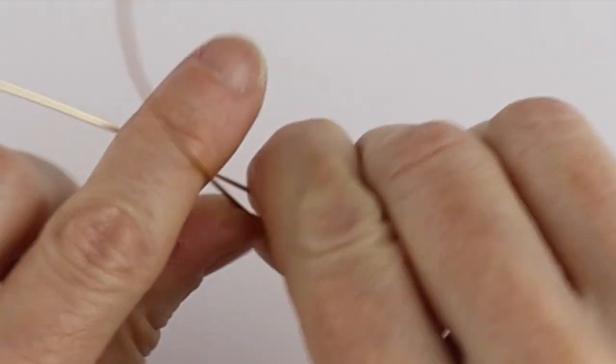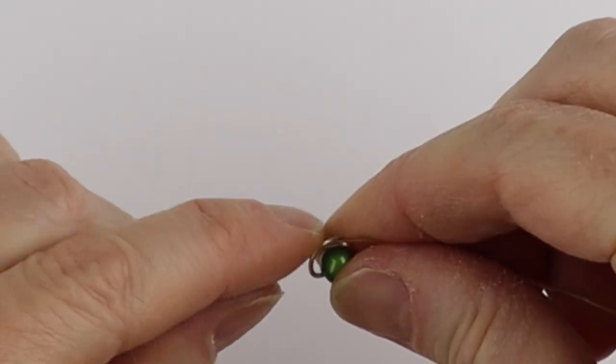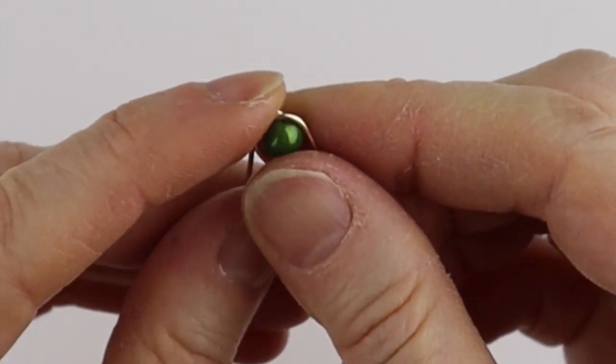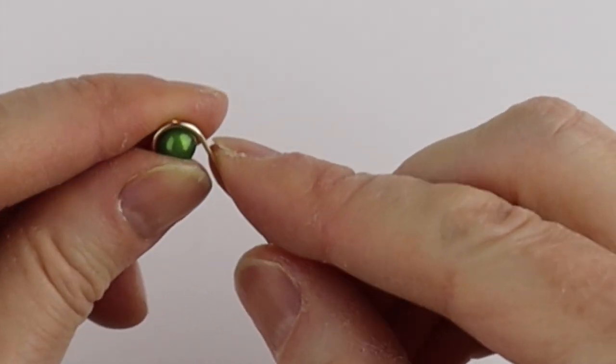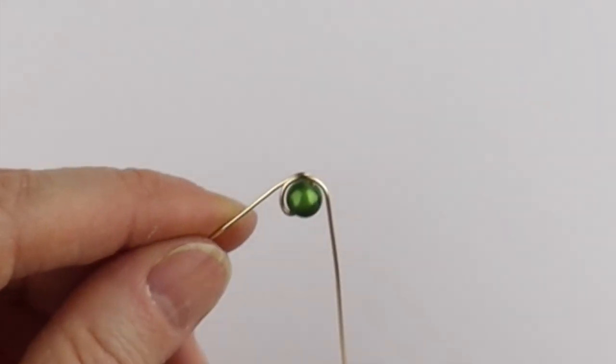We're just going to wind this around, bring it all the way around here so it goes on either side of the bead. From there we want to form the head.